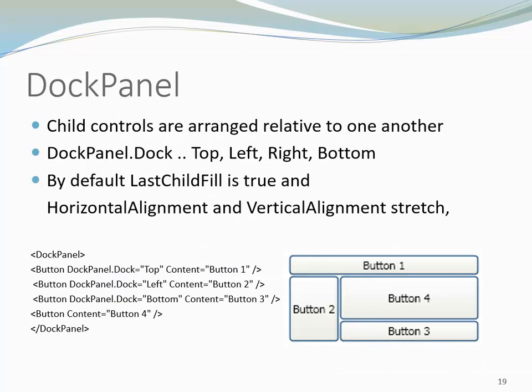Another container control is the Dock Panel. In this case, child controls are arranged relative to one another. The Dock Panel allows us to place a component on top, the left, the right, or on the bottom. By default, the property Last Child Fill is set to True, which means that the control that is added last takes up the space that remains. Both the horizontal and vertical alignments are set to stretch.